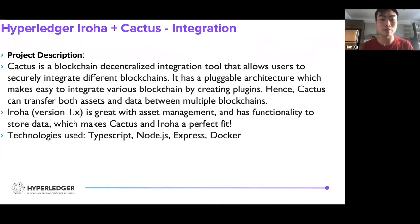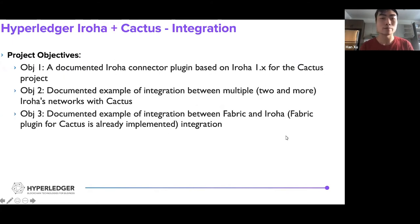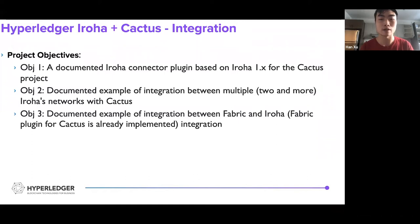The technologies I used are TypeScript, Node.js, Express, and Docker. For the project initial objectives, we defined three goals: first, a documented Iroha connector plugin based on Iroha version one for the Cactus project; second, a documented example of integration between multiple Iroha networks with Cactus; and last but not least, a documented example of integration between Fabric and Iroha.